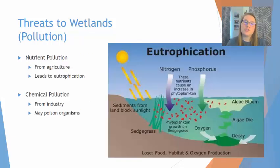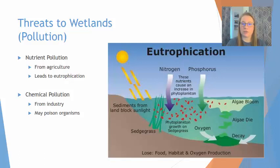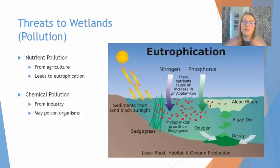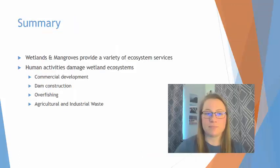Finally, pollution can impact wetlands. This can be in the form of nutrient pollution — nutrient runoff from agriculture which leads to eutrophication. This can also be in the form of chemical pollution from industry, and those chemicals could poison the organisms living in that wetland.